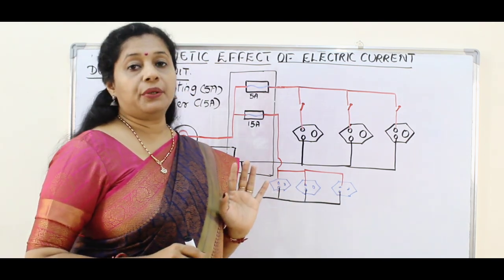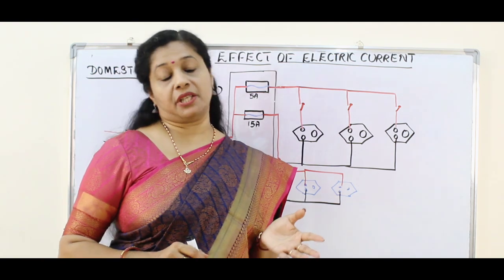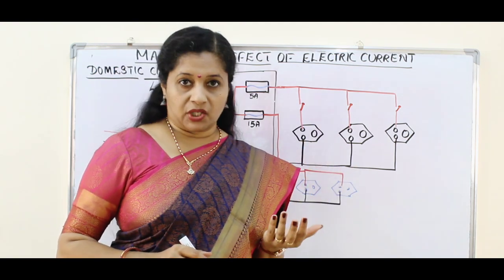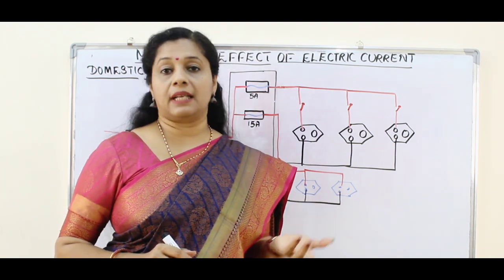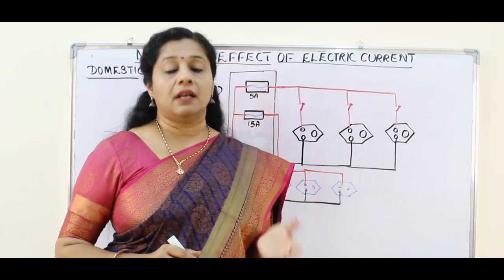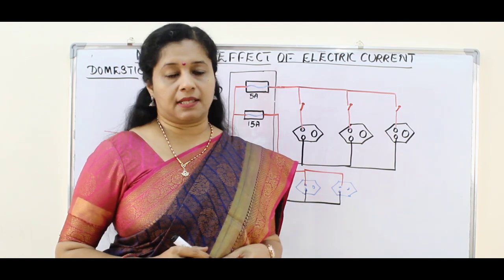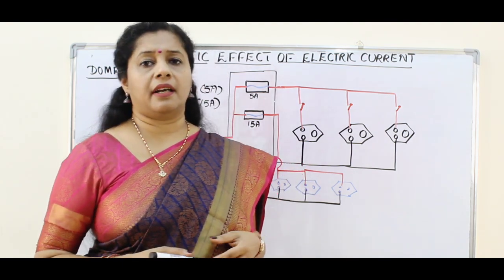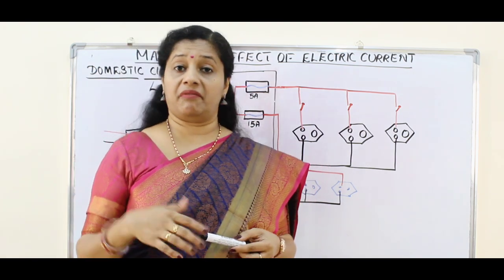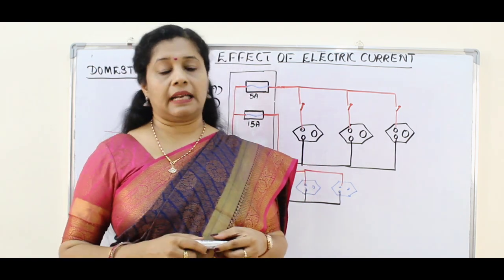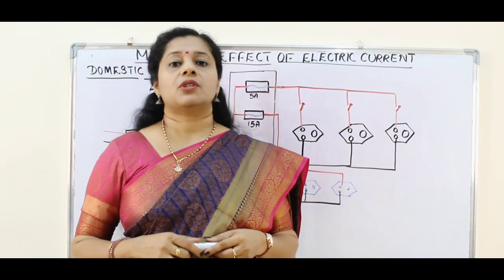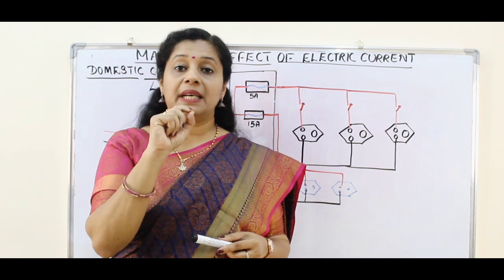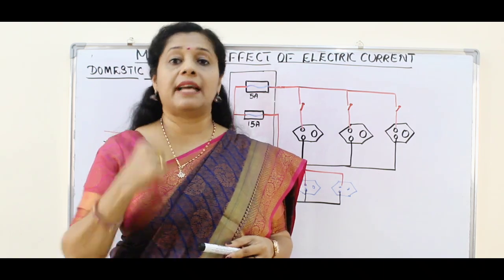Now we are going to think about the safety measures we have to follow. Electricity is very dangerous — electric shock can be life-threatening, and catching fire is another hazard. All these can happen due to wear and tear or damage to appliances, or careless handling. There can be damage to the insulation of the live wire — it may be nibbled by rats or insects, or the wire may break at a point where it is folded repeatedly.